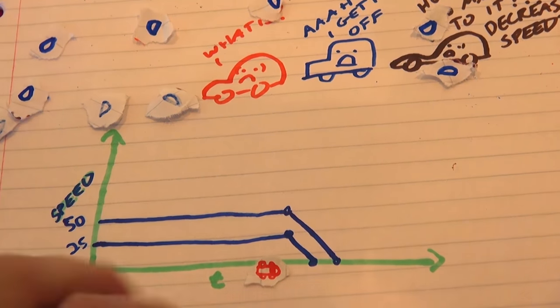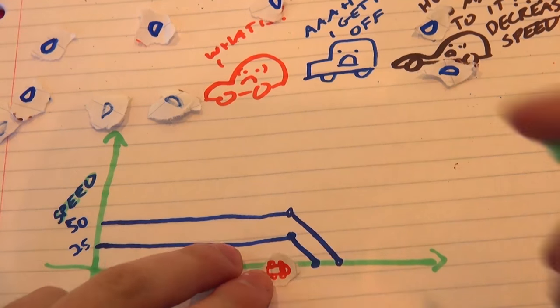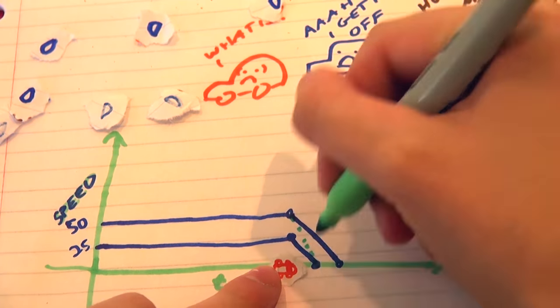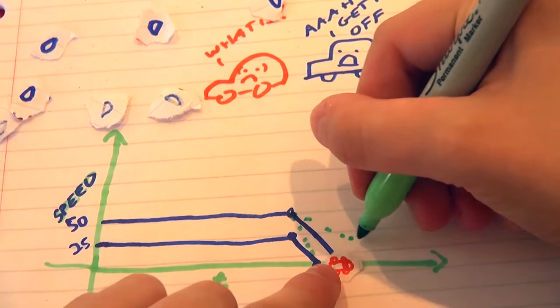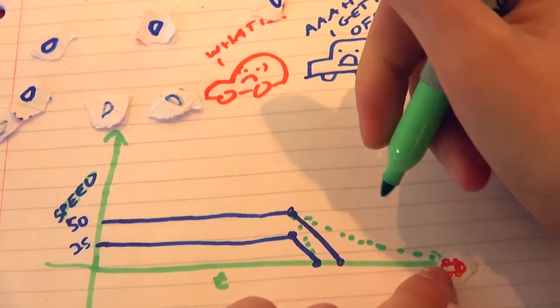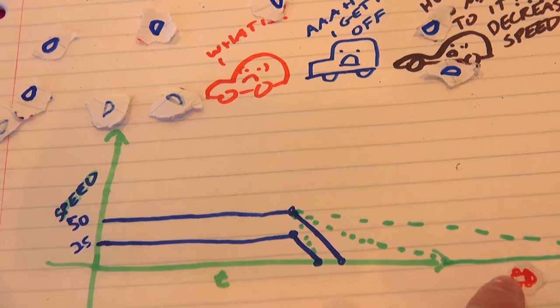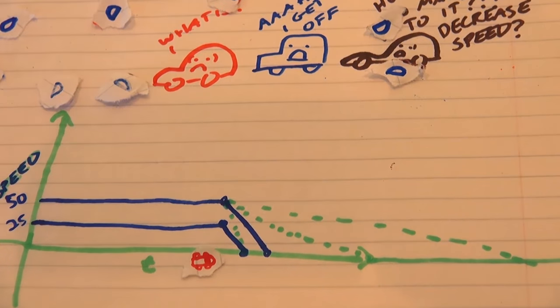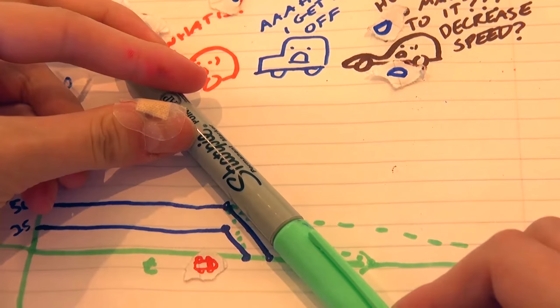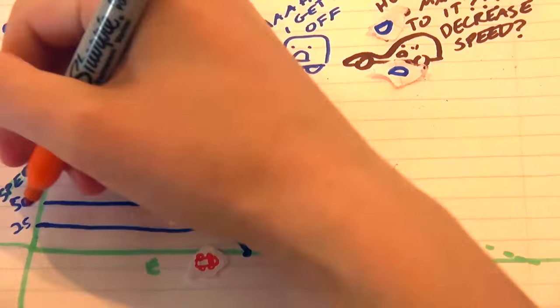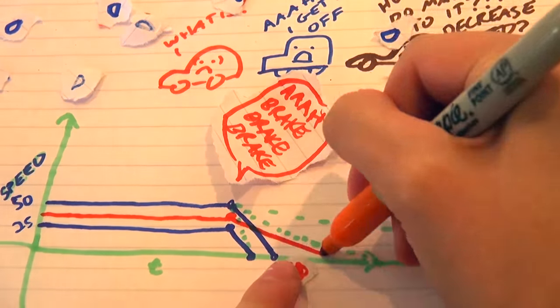The slope of this line changes depending on your car and on road conditions. Maybe you come to stop really quickly, or maybe your brakes are bad or the road is icy and you just kind of glide for a while until finally you hit zero. Your car might be able to decelerate real fast when it's dry, but not so fast when it's raining. And then even if you start out slower, it might take longer to actually stop.